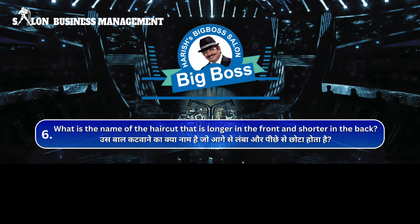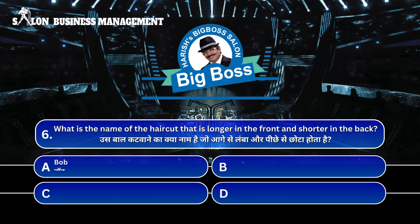Question 6. What is the name of the haircut that is longer in the front and shorter in the back? Us baal katwane ka kya naam hai jo aage se lamba aur peechhe se chhota hota hai? A. Bob, B. A-line Bob, C. Straight Cut, D. Shag.